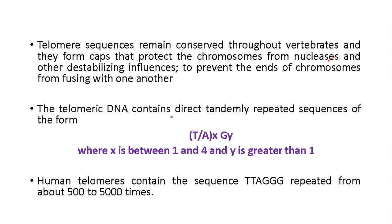The telomere DNA contains directly tandem repeats in the form of T(x)A(x)G(y), where x can range between one and four, and y can be greater than one. Human telomeres contain the sequence T2AG3. Using this formula, we can determine how many T, A, and G nucleotides are present in a repeated sequence. These repeated sequences occur approximately 500 to 5000 times.